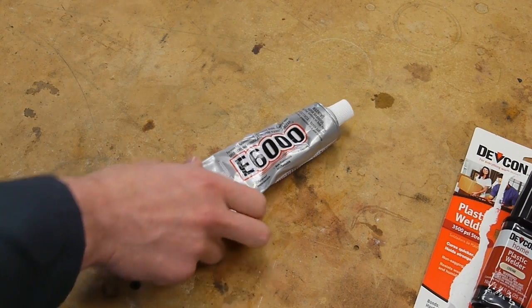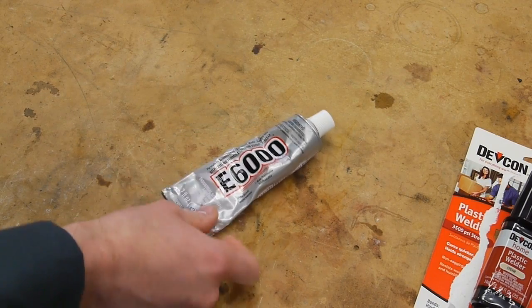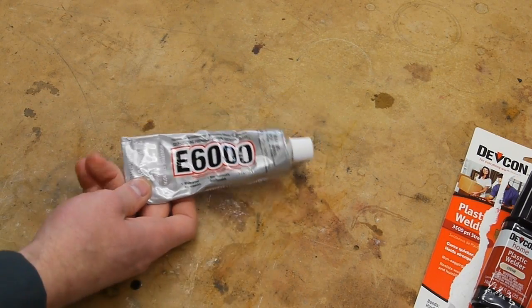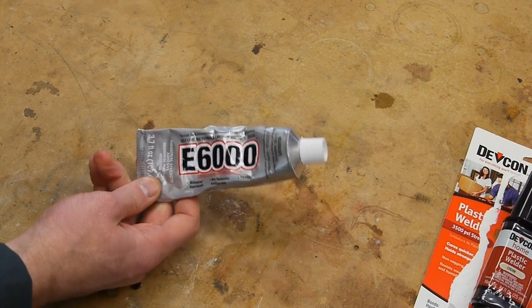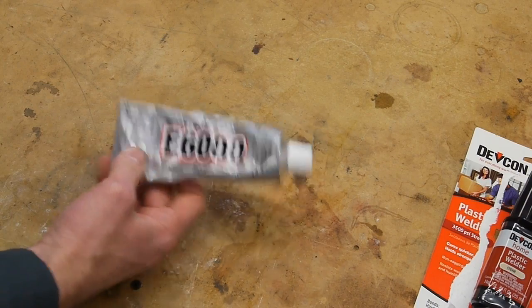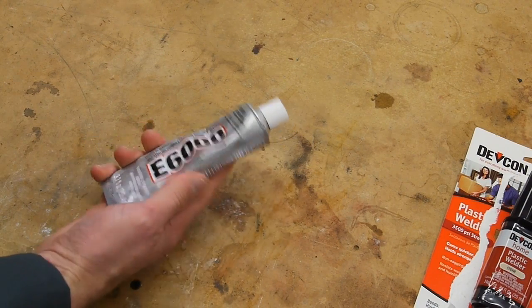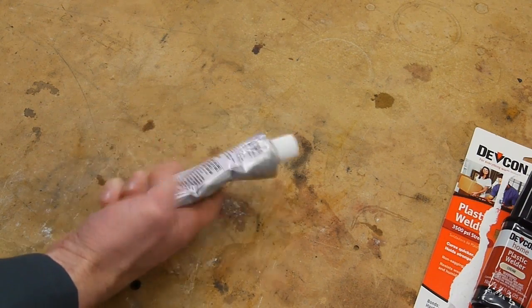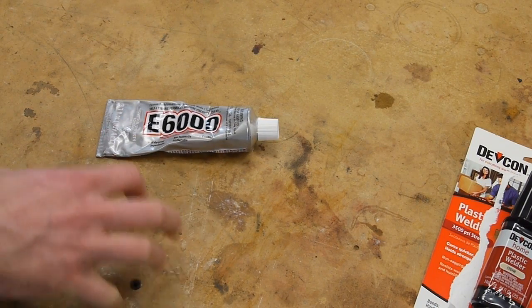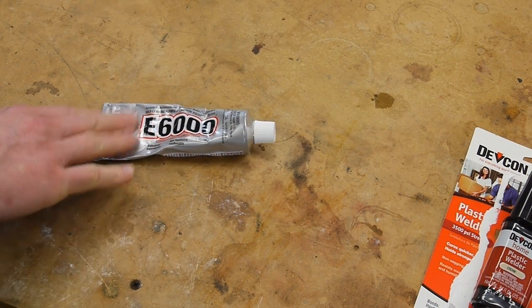If I could pick a second adhesive it would definitely be E6000. This is a very flexible sort of adhesive and the MSDS sheet makes it unclear as to what's actually in here. The solvent is perchloroethylene and I believe it's just a clear elastomer dissolved in that solvent.